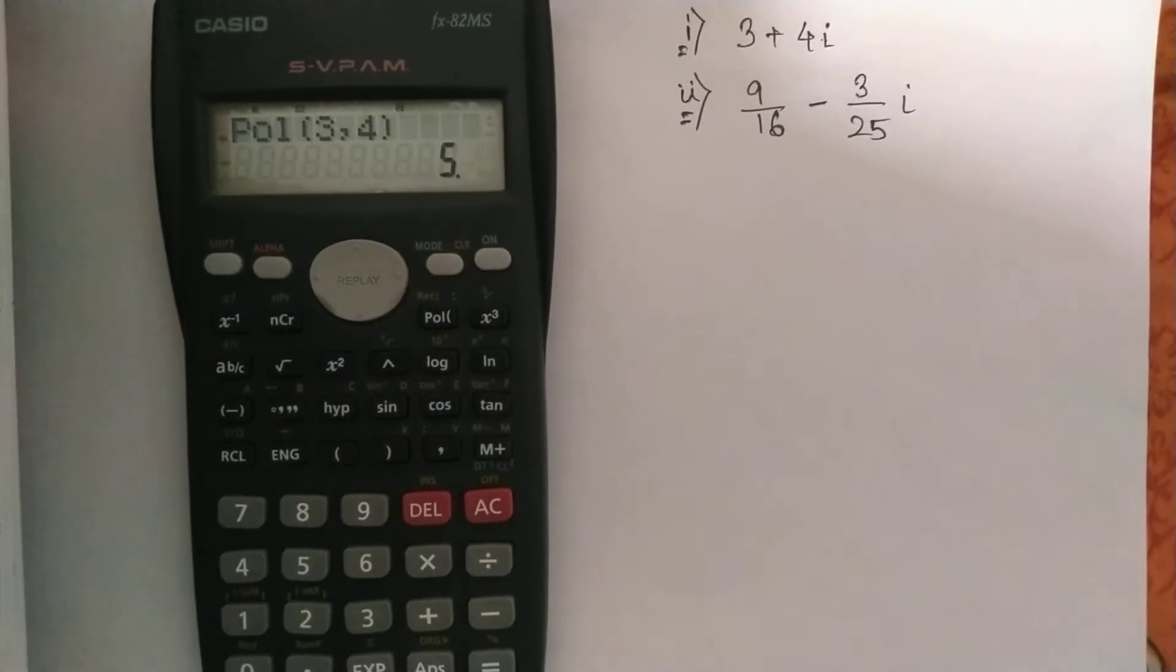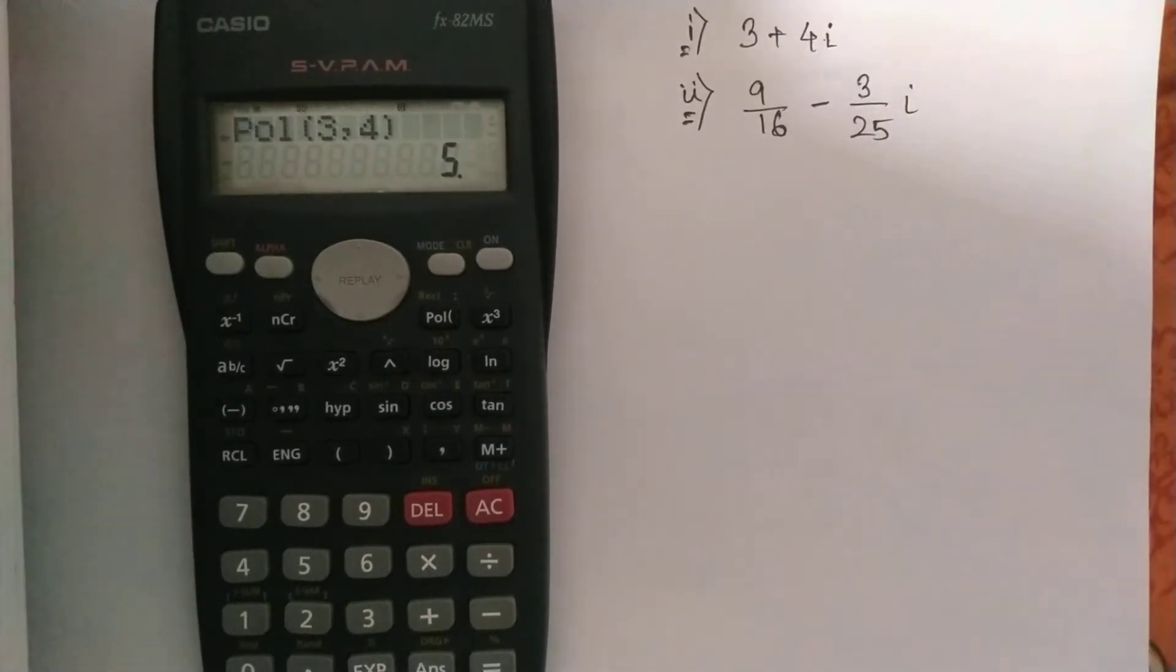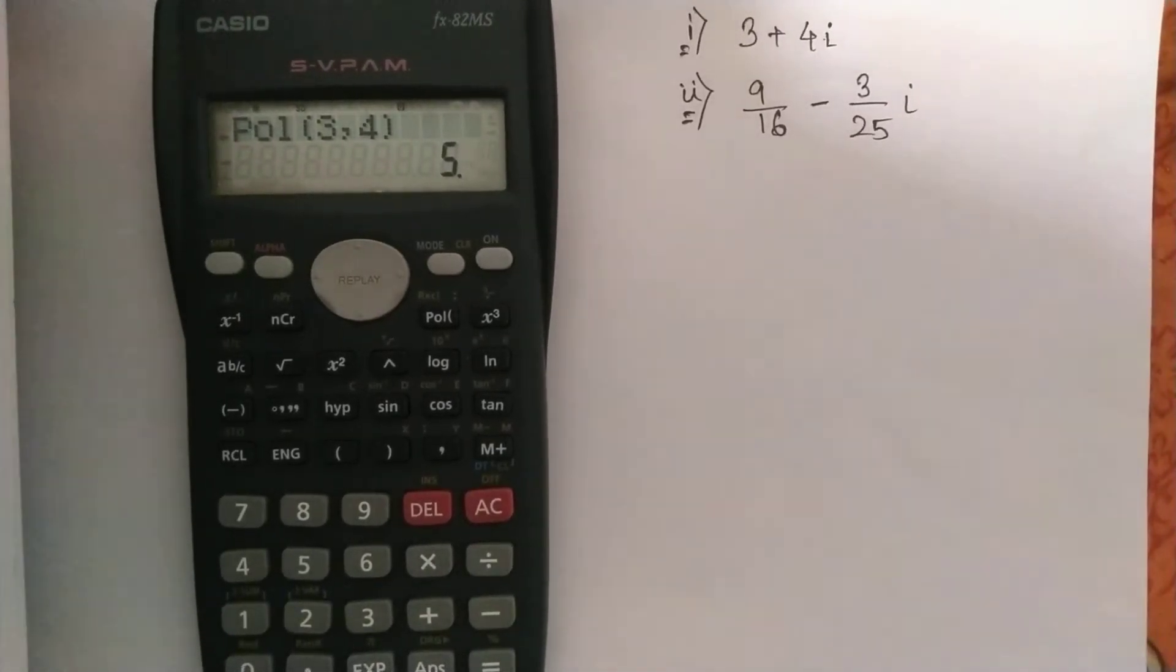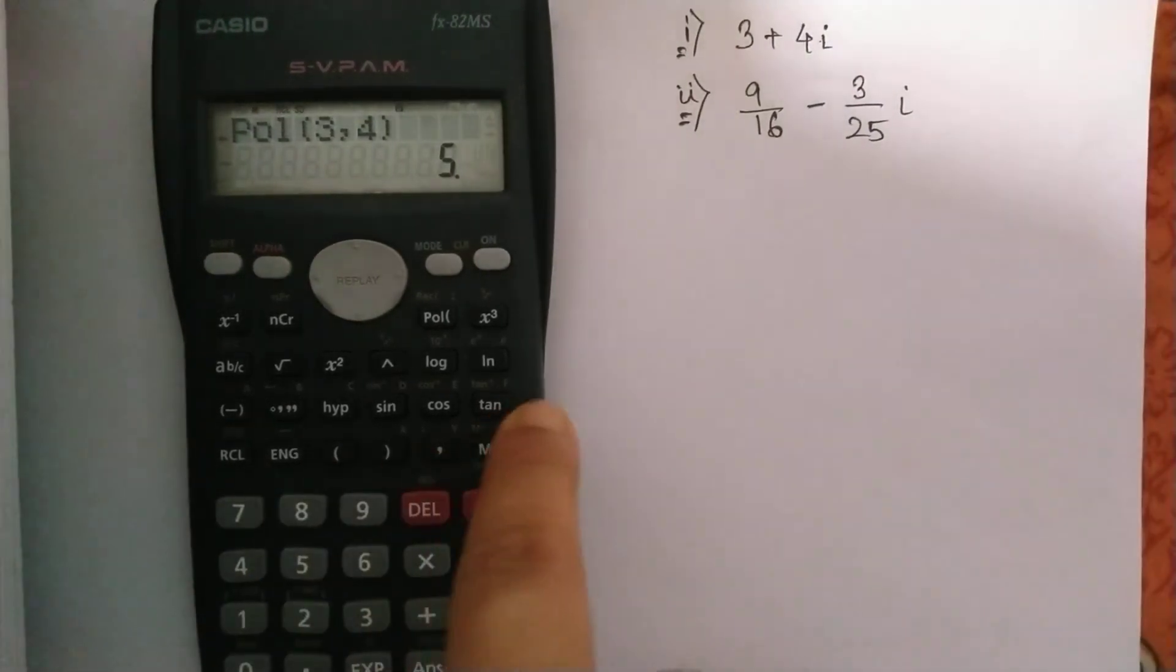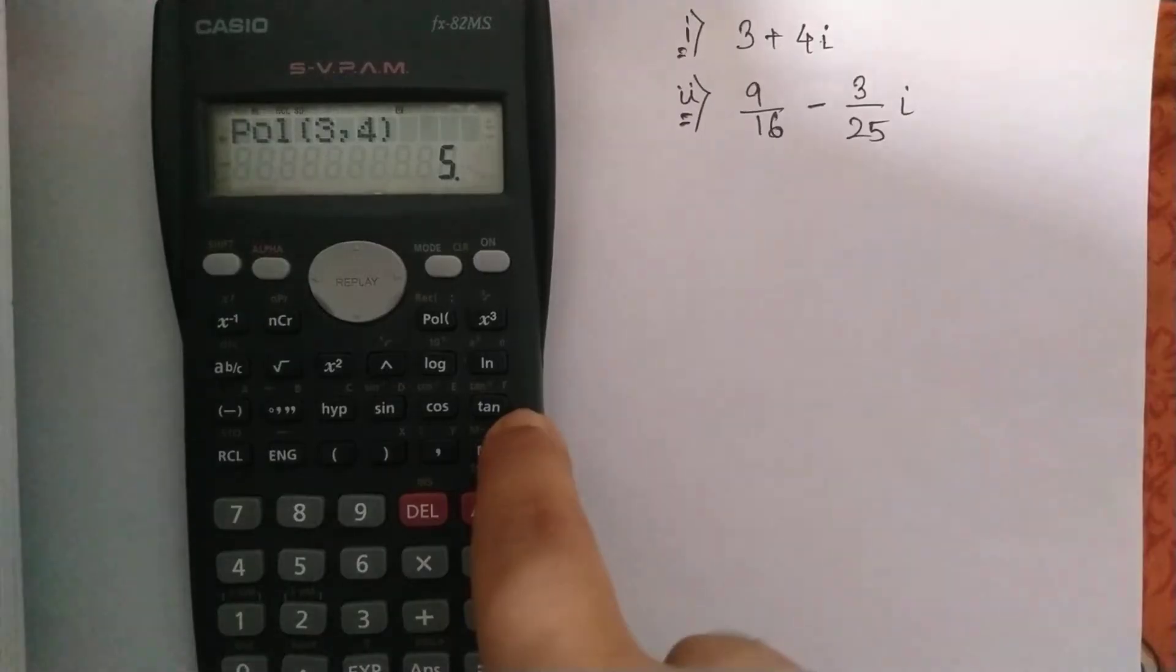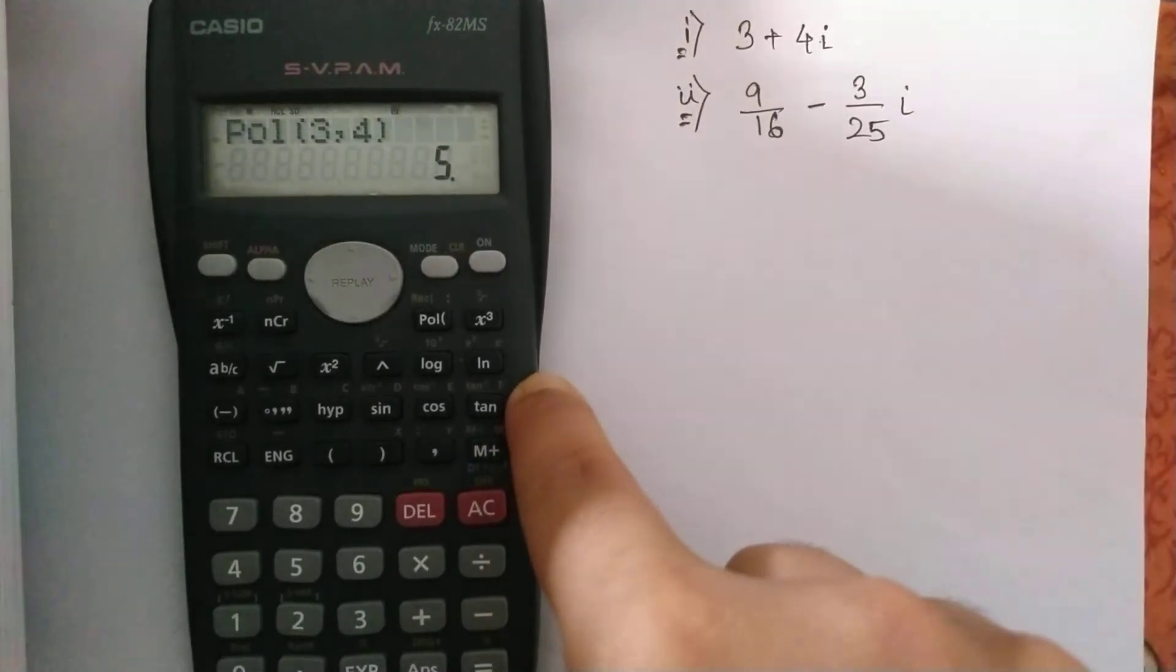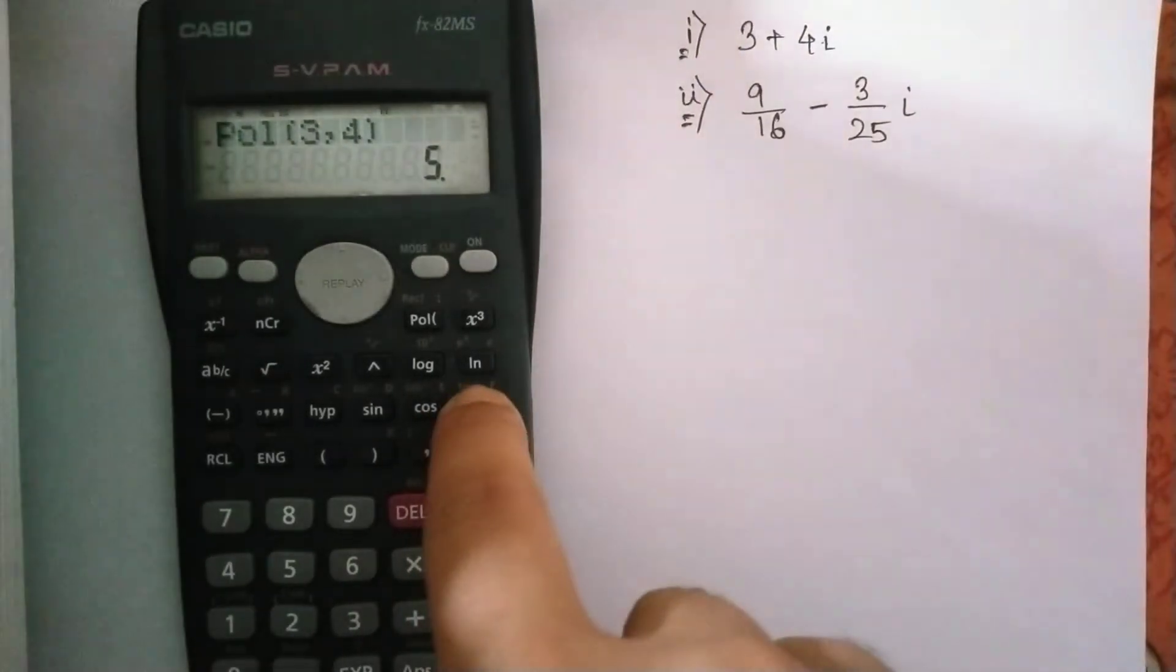Now if you want to know about the angle or the argument, what you have to do is press the recall button (RCL) and then press F. You can see here 'tan' and above it is written F. So if you press that, you will get the argument 53.13 degrees. So it is very simple.